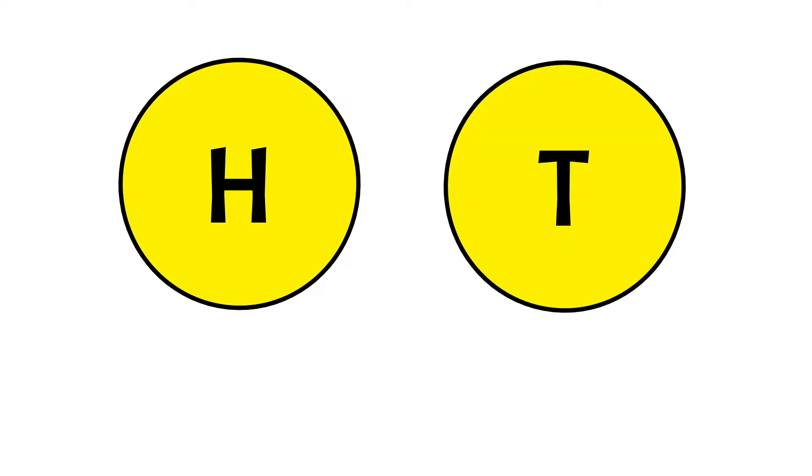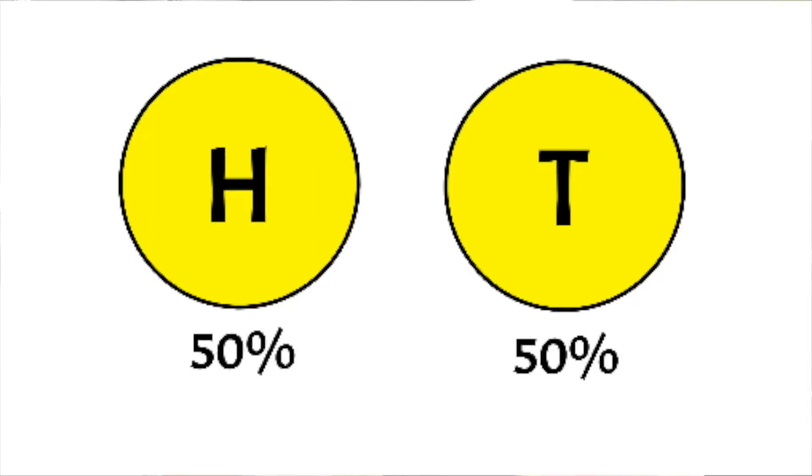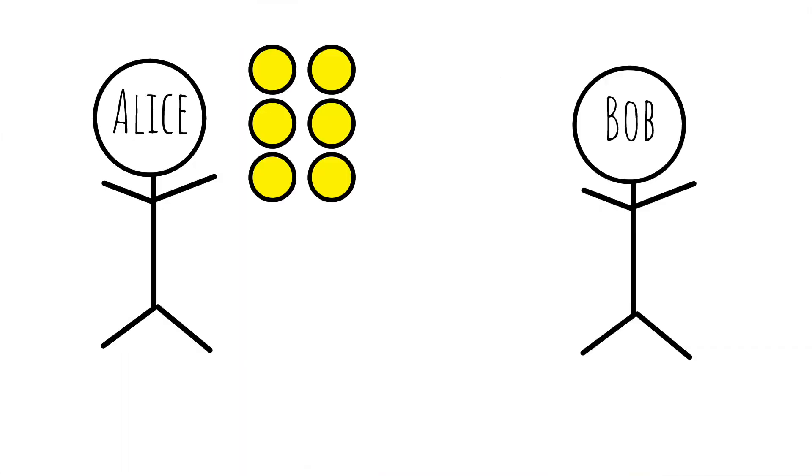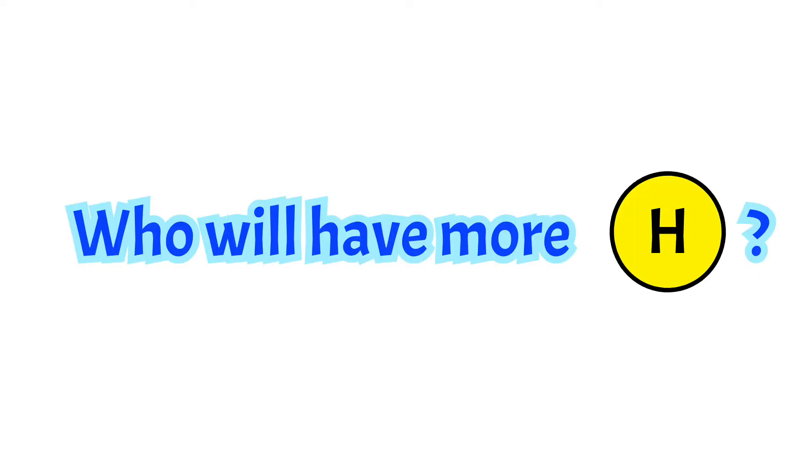All coins are fair meaning head and tail show up with equal probability of one half. Alice flips all 6 coins and Bob flips all 5 coins, trying to compete who gets more heads.